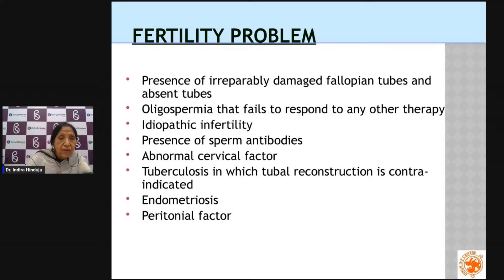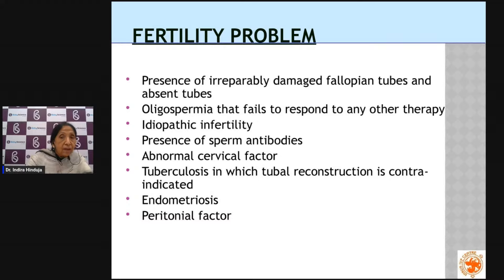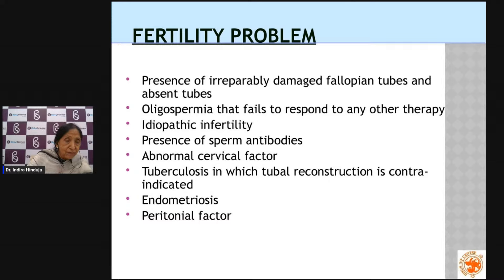There are also cases where we do not know the cause at all — that is idiopathic or unexplained infertility. Sometimes the woman is allergic to the sperm or the sperm develops antibodies against itself. When the cervix is defective and does not allow sperm to migrate upward, IVF is indicated. The most common condition in our country is tuberculosis, which can affect the fallopian tube, the uterus, or any part of the body. Even after healing, the function of the fallopian tube is greatly lost, requiring IVF.